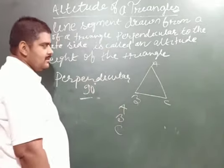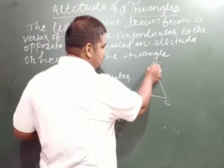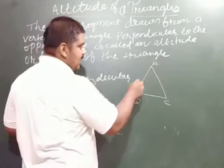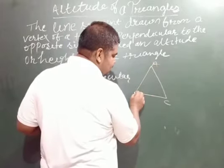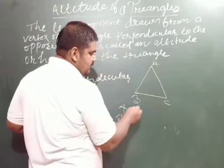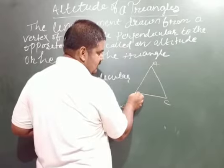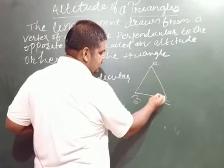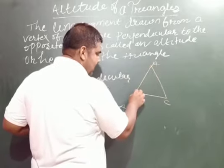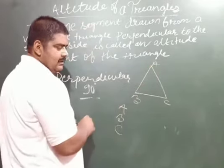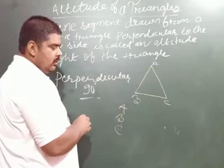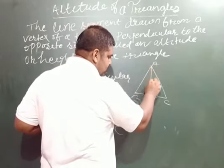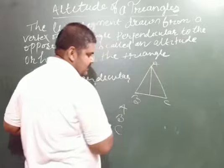What are the opposite sides of each vertex? The opposite side of A is BC. The opposite side of B is AC. And the opposite side of C is AB. From vertex A, you have to draw a perpendicular to its opposite side.